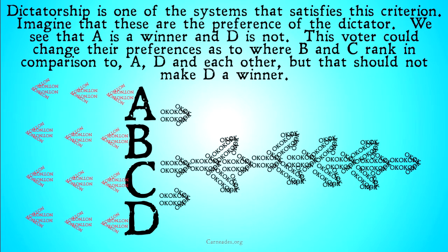Dictatorship is going to be one of the systems that satisfies this criterion. Imagine that these are the preferences of the dictator. We see A is the winner and D is not. This voter could change their preferences as to where B and C rank in comparison to A, D, and each other, but that should not make D a winner. The point is that A is a winner and D is not. As long as this voter keeps A above D, there should be no way that D wins.